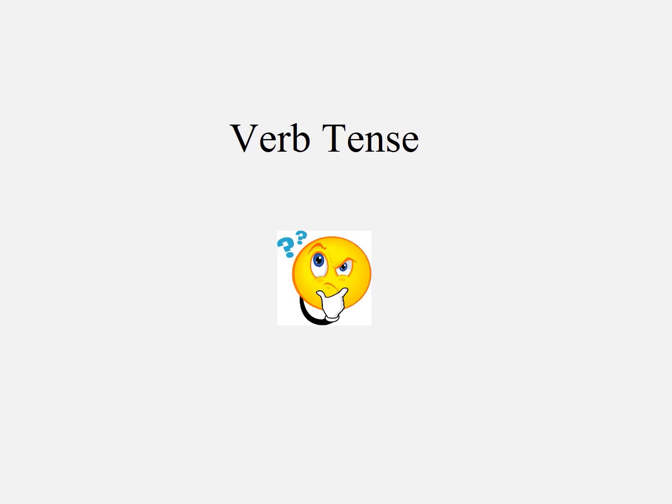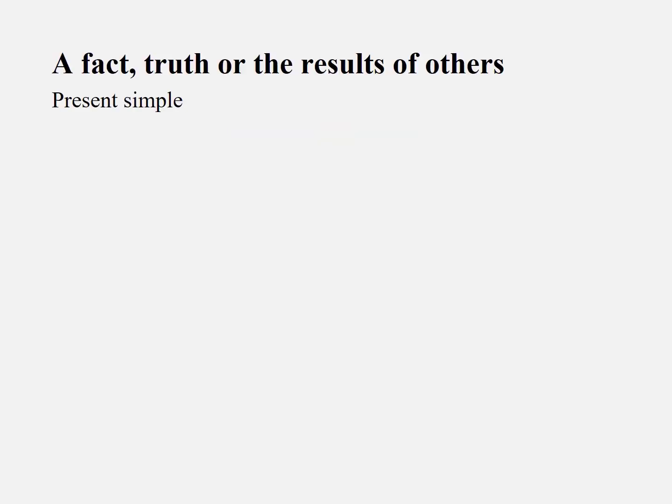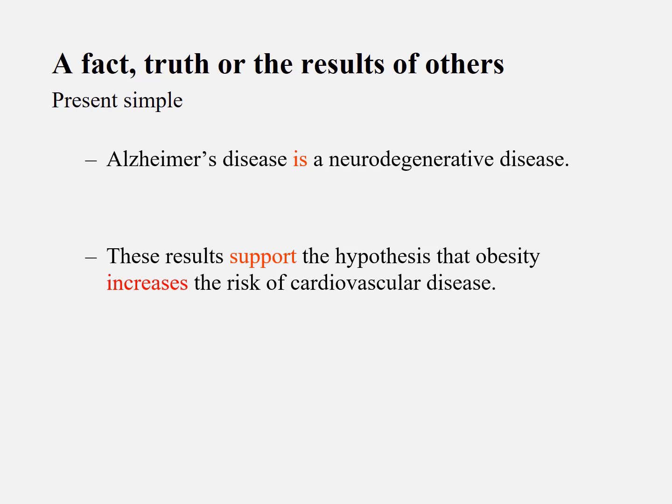I would like to talk about the tenses used in each sentence. When you write a fact, truth, or the results of others, you just use the present simple. For example, 'Alzheimer's disease is a neurodegenerative disease' — you use 'is,' present simple, which is a fact. Or you say 'these results support the hypothesis that obesity increases the risk of cardiovascular disease,' which is a truth.